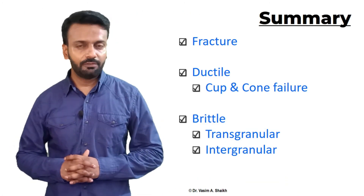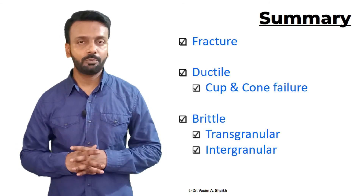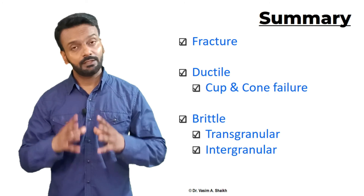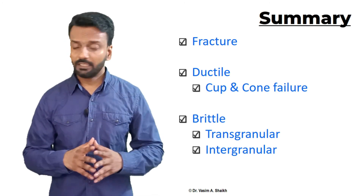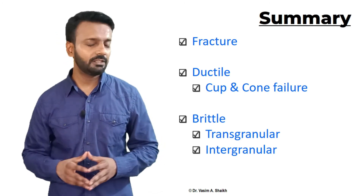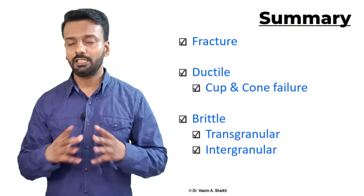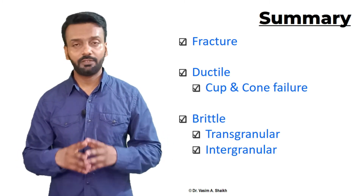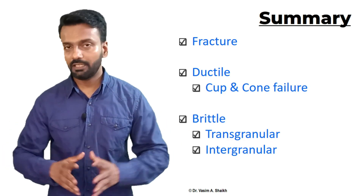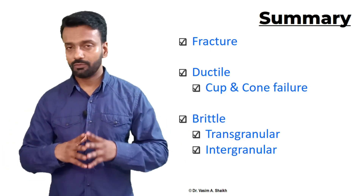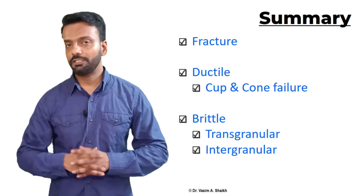Let us summarize what we have seen in this video. Fracture is nothing but separation or breakage of the material into two or more parts when we apply a load at a temperature lower than the melting temperature. There are two types of fracture: ductile fracture, accompanied by a lot of plastic deformation where you can visibly see the material deforming and about to break; and brittle fracture, where the material fails catastrophically without intimation. There are two types of brittle fracture: intergranular and transgranular fracture. Thanks for watching.